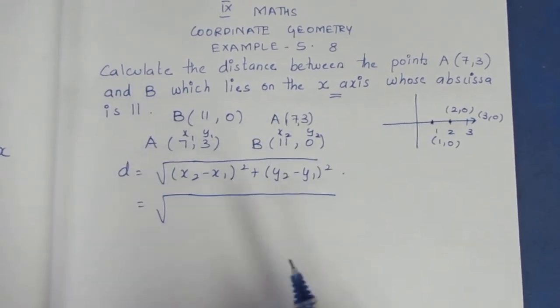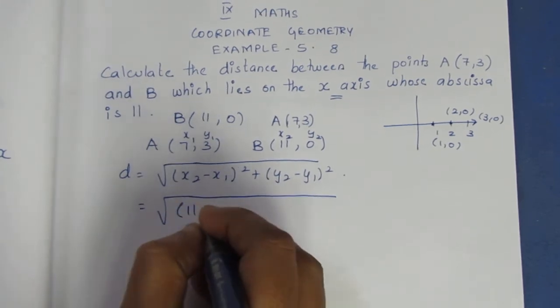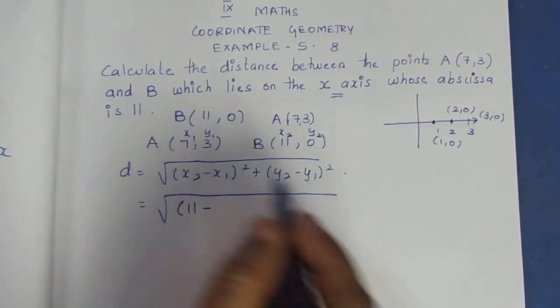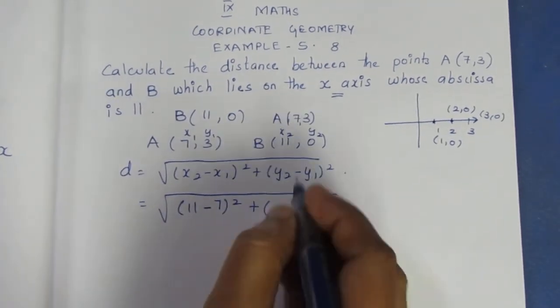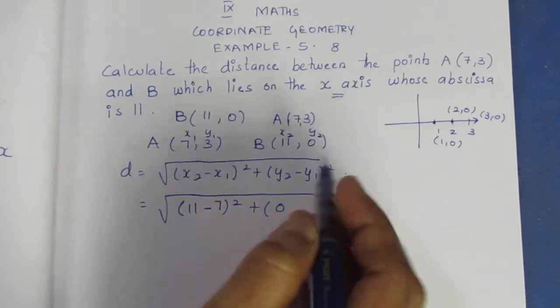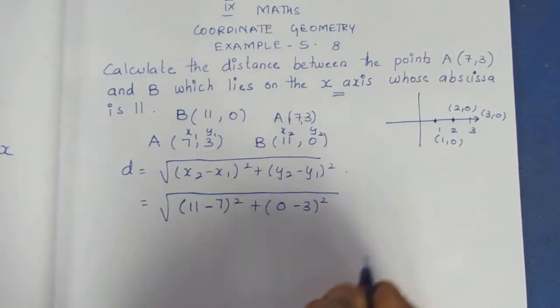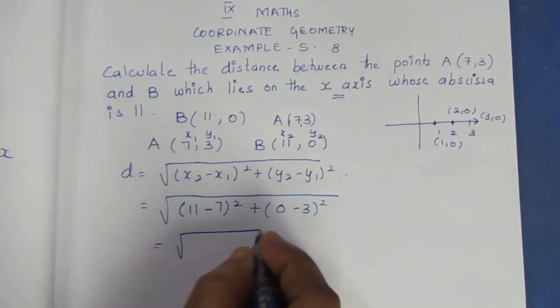Plus, first one is 0, second one is 3. Whole square. Now, solve it.